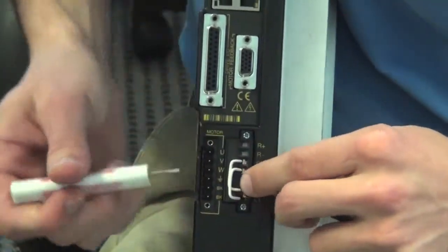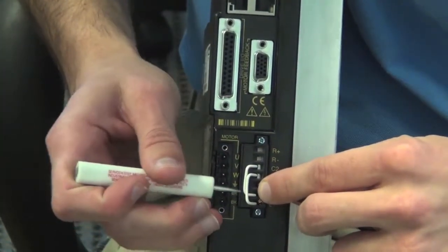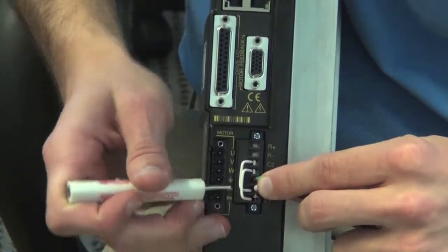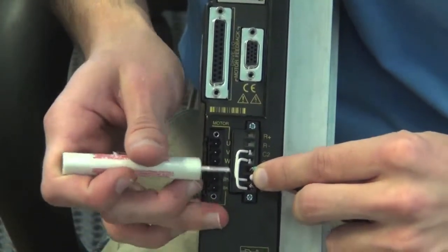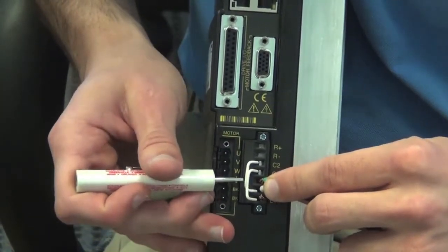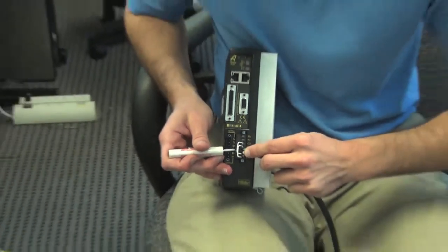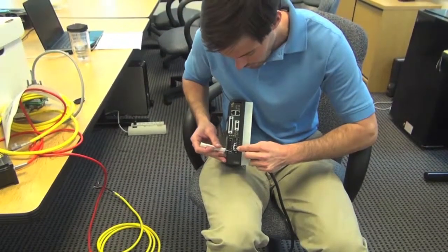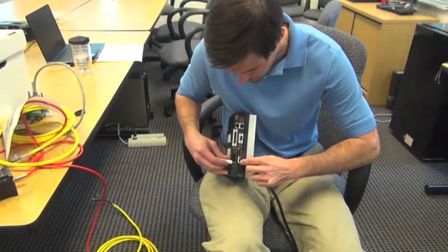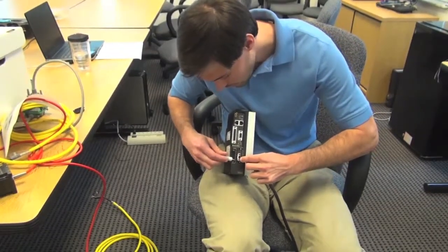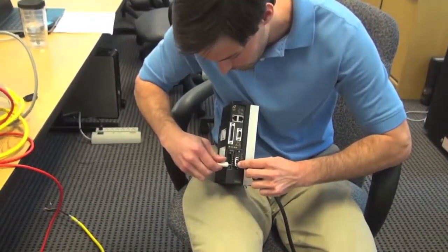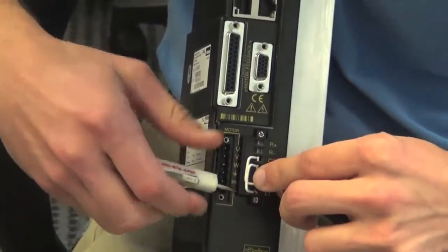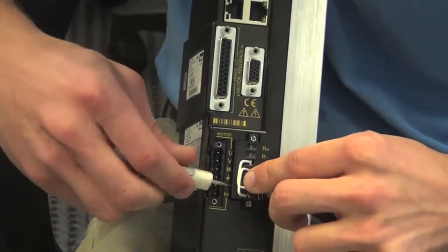The Parker Aries will come with these white jumper cables that jump from L1 and L2 to your control one and control two power, because the controls on the Aries drive are 120 volts AC as well. These will come pre-installed, and you just tighten up your 120 volts into the L1 L2 connections and your ground into your ground connection, and you'll be done.